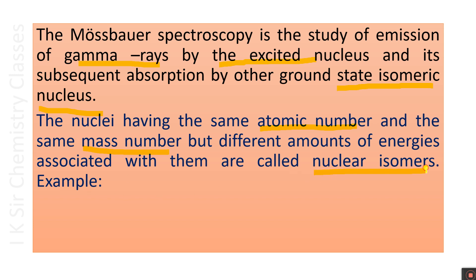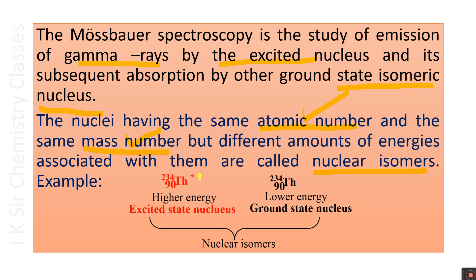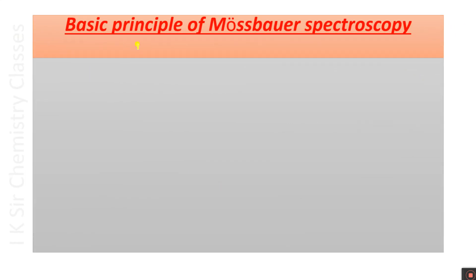What are nuclear isomers? For example, thorium-234* is the excited state nucleus — it has higher energy. Thorium-234 is the ground state nucleus — it has lower energy. Note that both nuclei have the same atomic number and the same mass number 234, but different amounts of energies are associated with them. Therefore these are nuclear isomers.